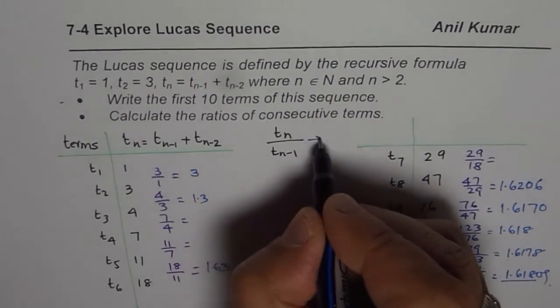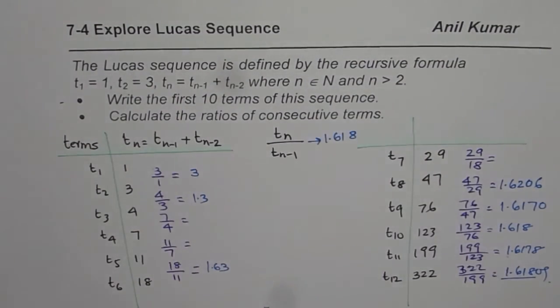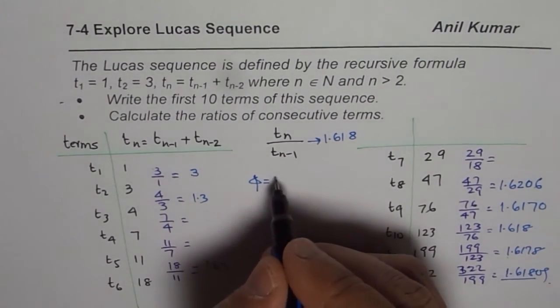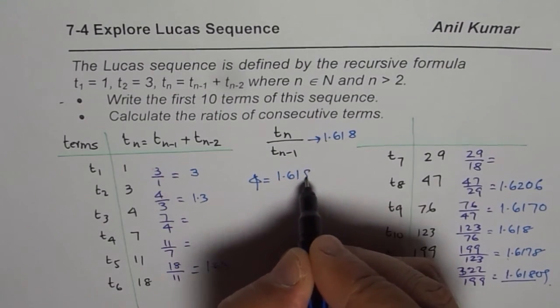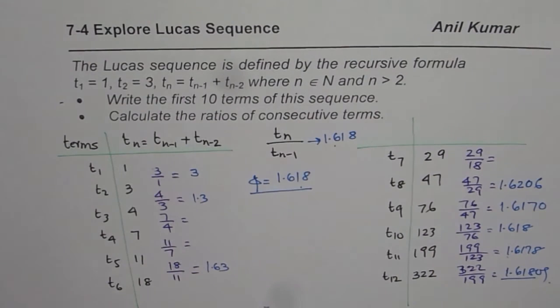So, this ratio approaches 1.618, and we also found the golden ratio, phi, and its value was 1.618033, something like that. So, anyway, to 3 decimal places is kind of same value.